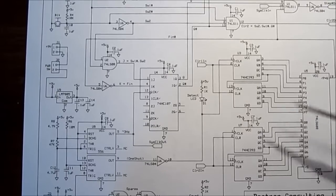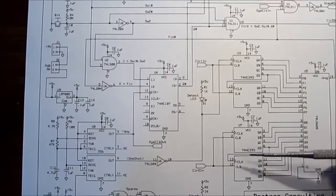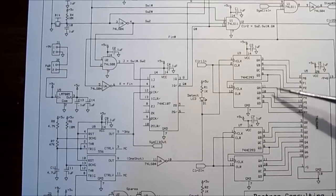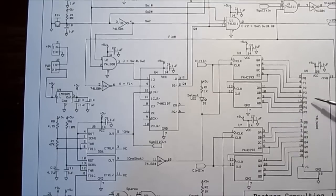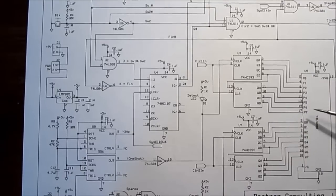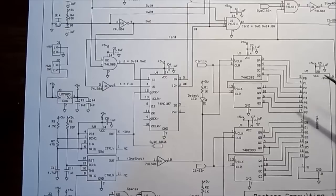This is a comparator, an 8-bit magnitude comparator, so that when this count gets up to equal the count that was already stored from the passive infrared in this counter, we will get an output here out of this comparator and that's that finish signal, F-I-N.